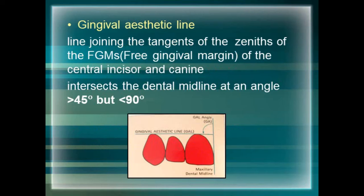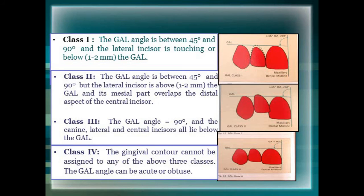The gingival aesthetic line, or GAL, is the line joining the tangents of the zeniths of the free gingival margin from the central incisors to the canine. The zenith is the most apical point at the gingival margin. The GAL usually makes an angle with the dental midline between 45 and 90 degrees, called the gingival aesthetic line angle. There are four classifications of the GAL angle based on the appropriate width-to-length ratio, anatomy, position and alignment of the maxillary anteriors.